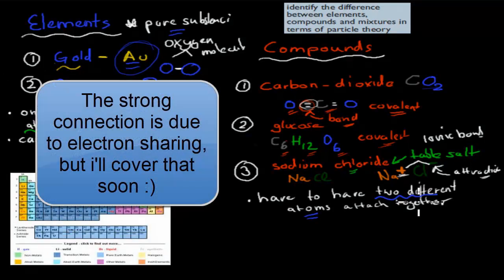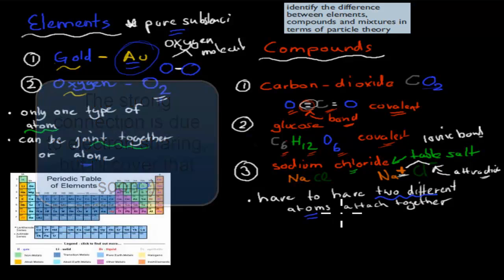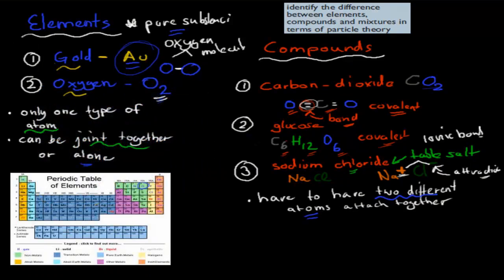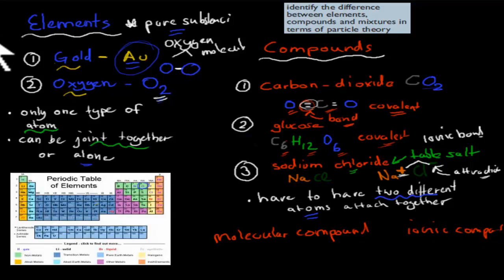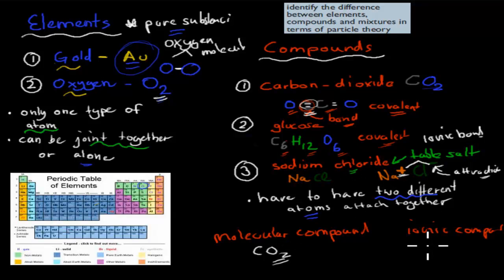So compounds have to have two different types of atoms — that's the difference between elements and compounds. There are two types of compounds. There is the molecular compound, for example carbon dioxide, where molecules have covalent bonds. And then there's the ionic compound, for example sodium chloride, where the positive and negative ions attract each other. We'll go over molecular compounds and ionic compounds more in the future.